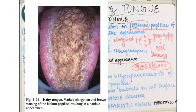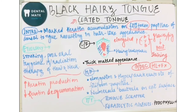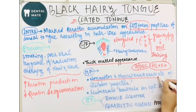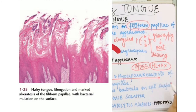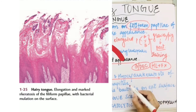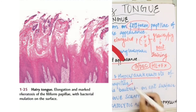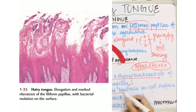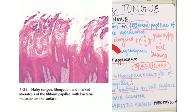Coming on to the histopathological features: there is elongation and hyperparakeratosis — that is, increased keratin production of the filiform papillae. Along with this, there are numerous bacteria which are seen on the epithelial surface.